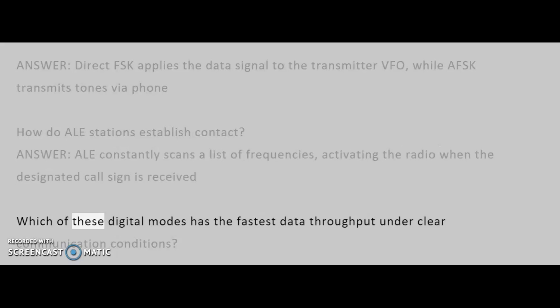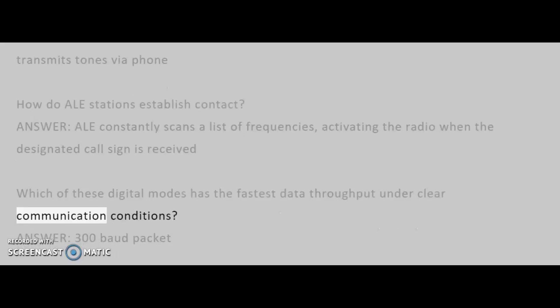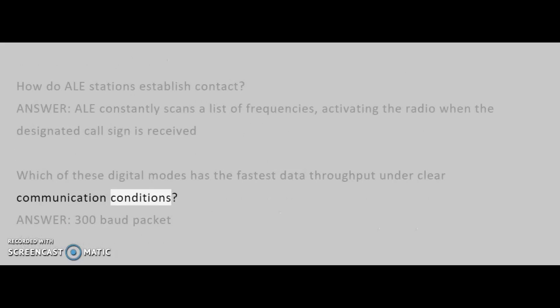Which of these digital modes has the fastest data throughput under clear communication conditions? Answer: 300 baud packet.